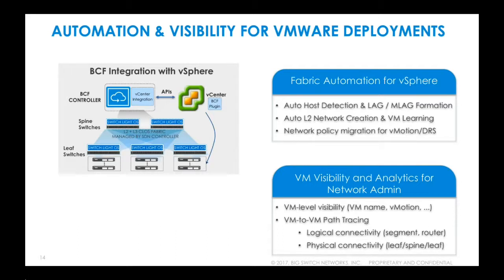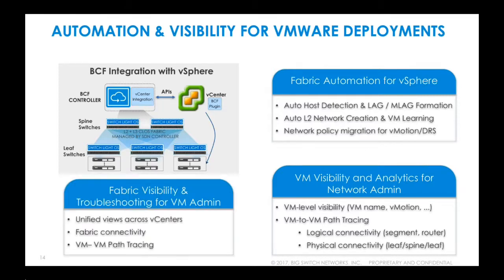The first BCF and VMware integration we'll cover is vSphere. The BCF controller has a VMware-specific module providing a management point for VMware workloads, where network admins can view information pulled from vCenter via APIs. There's also a BCF plug-in available in vCenter to give VM admins visibility into the BCF network fabric. For organizations with converged teams or those where network and VM admin teams operate independently, this integration provides tools to view and troubleshoot across both virtual and physical domains.